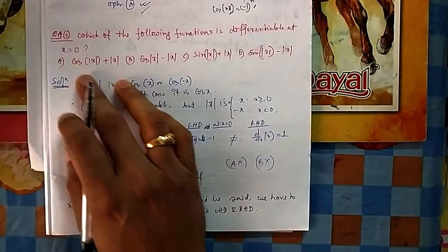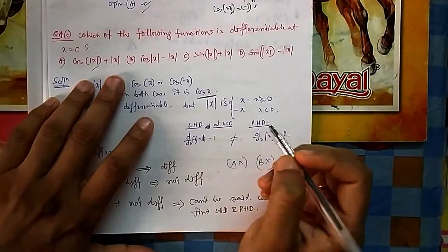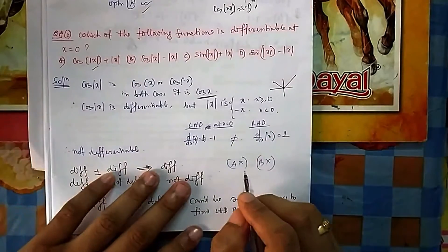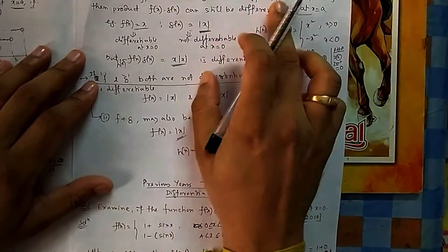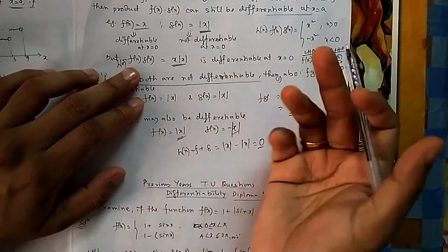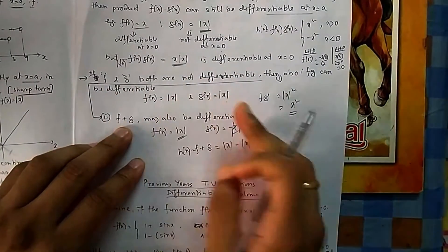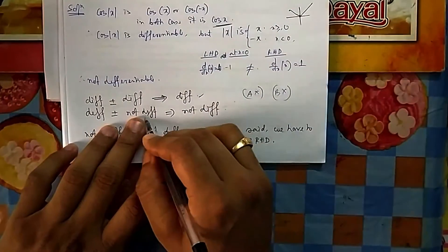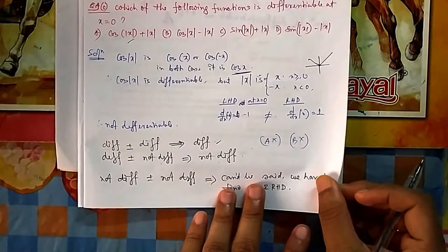For Q4c, which function is differentiable at x equal to 0? cos|x| equals cos x, so it is already differentiable. But |x| is not differentiable at x equal to 0 because of the sharp corner. From theory: differentiable plus differentiable is differentiable; differentiable plus not-differentiable is not differentiable; but not-differentiable plus not-differentiable — you cannot say directly and must check.